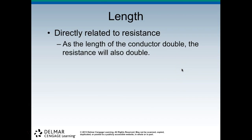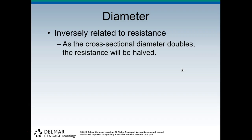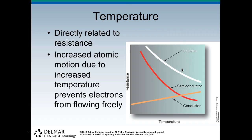Length is directly related to resistance — as the length of the conductor doubles, the resistance also doubles. Diameter is inversely related to resistance — as the cross-sectional diameter doubles, the resistance is halved. Think of a garden hose: a small-diameter hose gives high velocity out the other end, whereas a large fire hose with the same pressure will just dribble out. Temperature is also directly related to resistance — increased atomic motion due to increased temperature prevents electrons from freely flowing. With a semiconductor, however, resistance drops as temperature drops.